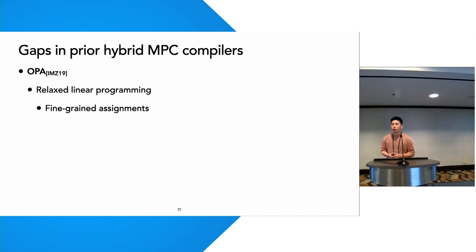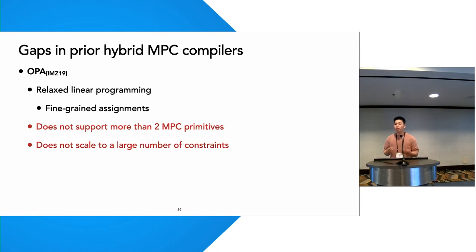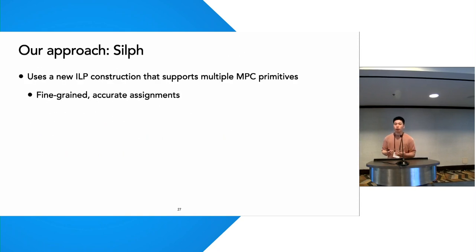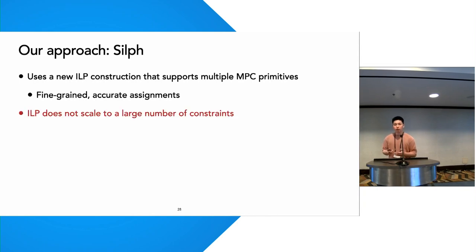Another approach formalizes the hybrid protocol assignment problem as an optimization problem and solves it using a relaxed linear program. Because this relaxed LP operates at a statement level, it achieves finer-grained assignments. However, this approach has limitations: first, their LP construction does not support more than two MPC primitives, and there exist benchmarks where more than two primitives are needed for the optimal assignment. Second, using ILP or LP does not scale to a large number of constraints, incurring very high compile times. In our approach, we devise a new ILP construction that supports an arbitrary number of MPC primitives, enabling finer-grained and more accurate assignments compared to OPA.